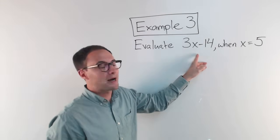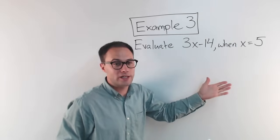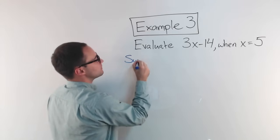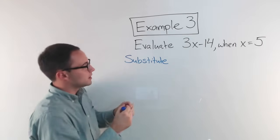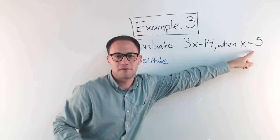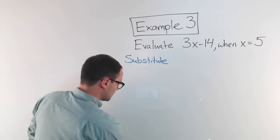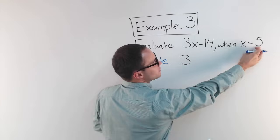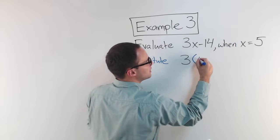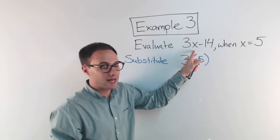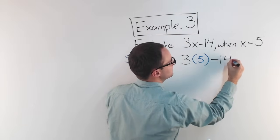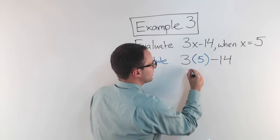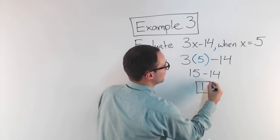Here's our last example: evaluate 3x minus 14 when x equals 5. They're telling us exactly what the variable equals. My first step is to substitute. To evaluate, I'm trying to find the value, so I substitute 5 in for x. A good habit is to use parentheses when you substitute. So I have 3 times (5) minus 14. Remember, 3x means 3 times x. Now it's just order of operations — multiplication first: 3 times 5 is 15. Then 15 minus 14 equals 1. That is my final answer.